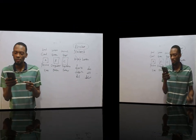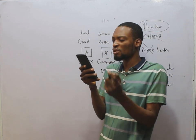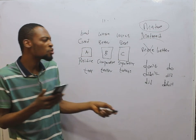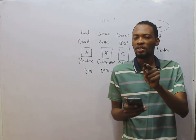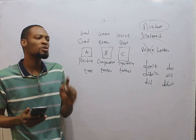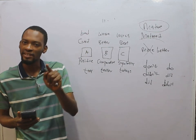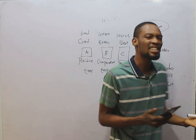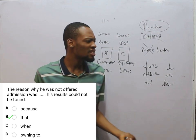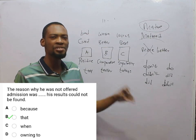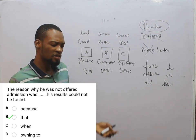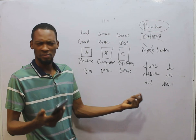The reason why he was not offered admission was dash his results could not be found. The reason why should always be followed by that, not because. Because is the same thing as reason, so saying the reason why is because is redundant and does not make sense. The correct form is: the reason is that. Simply say the reason is that, or why I did not do it is that.